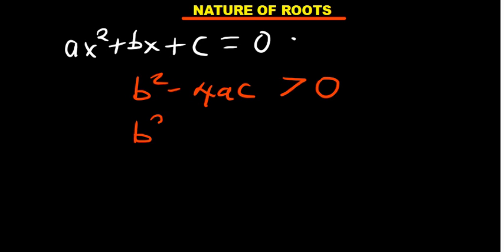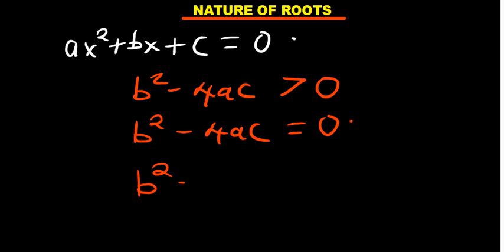The discriminant can also equal 0, or it can be less than 0. These three cases summarize the nature of the roots.